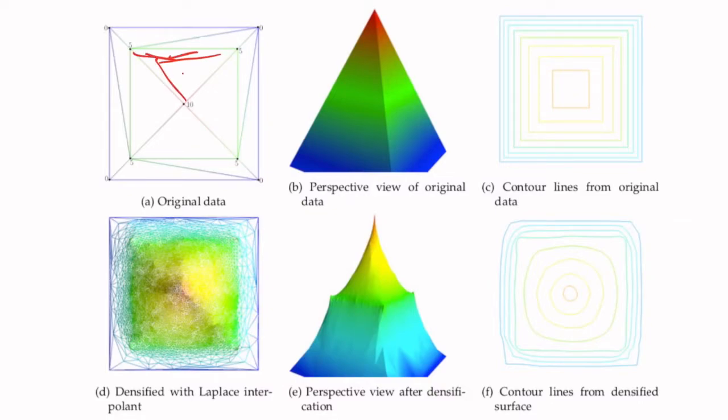Observe the results we obtain only by using the densification operator for a synthetic dataset, a simple pyramid having a base at an elevation of 5 and its apex at an elevation of 10. Notice that by adding iteratively, so doing several passes over the triangle, so doing several paths of the densification, we obtain contours that are way smoother than the original ones.